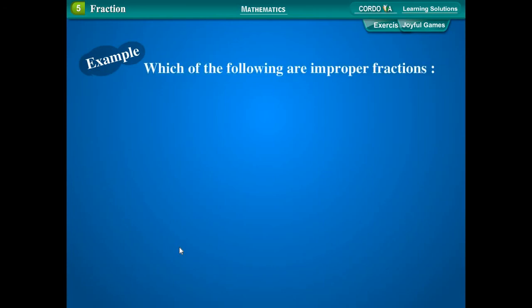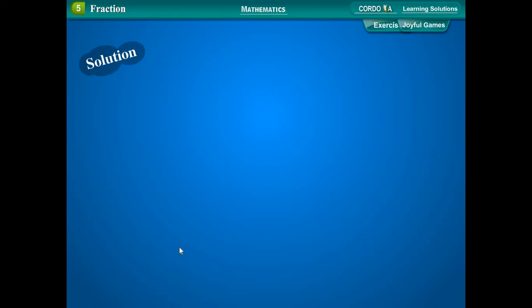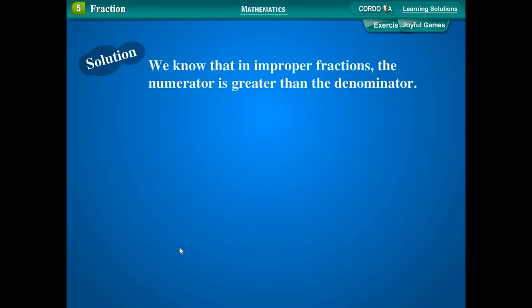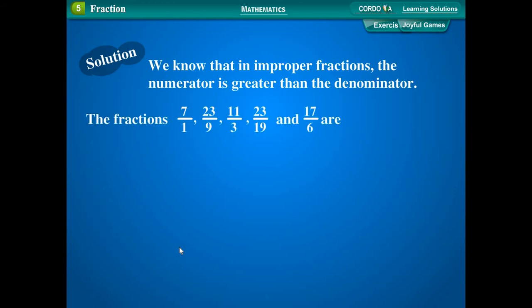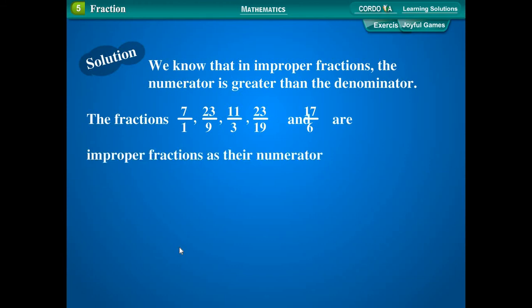Example: Which of the following are improper fractions? 7, 3 upon 13, 23 upon 9, 11 upon 3, 5 upon 7, 23 upon 19, 17 upon 6. Solution: We know that in improper fractions the numerator is greater than the denominator. The fractions 7 upon 1, 23 upon 9, 11 upon 3, 23 upon 19, and 17 upon 6 are improper fractions, as their numerator is greater than their denominator.